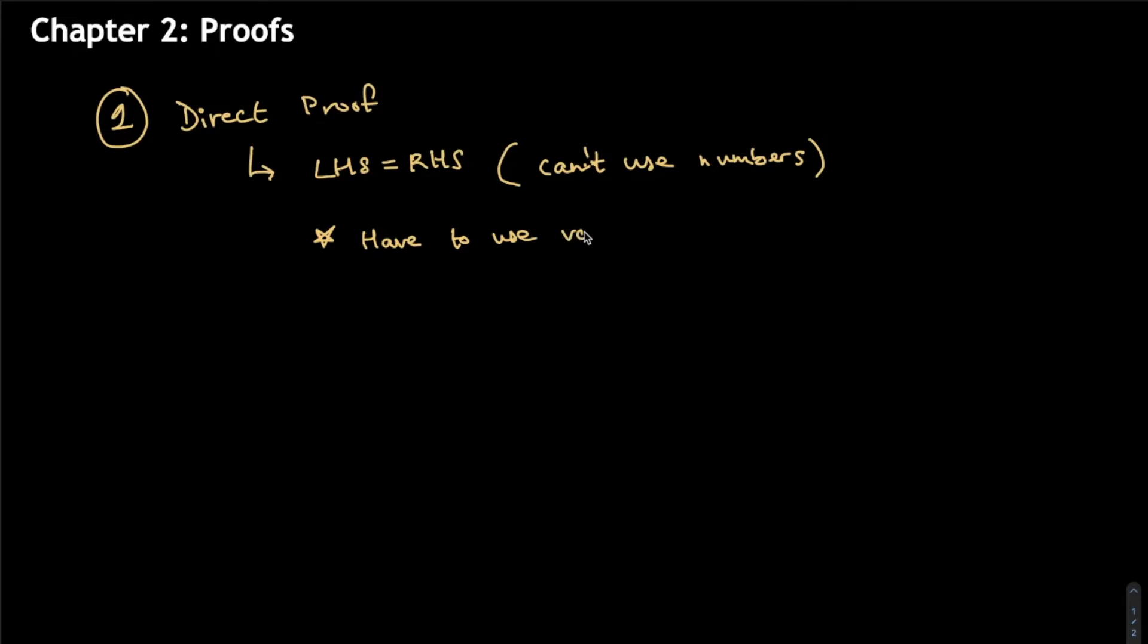Because what we're trying to prove here is that suppose we're given a statement and we're told to prove it, that statement must work for all real numbers, or it must work for the domain of the numbers that are mentioned. It must work for that, not just for certain numbers where it doesn't work for other cases. Then it's not really a proof. You're just adjusting the situation to match the way you want it. So you have to use variables here.